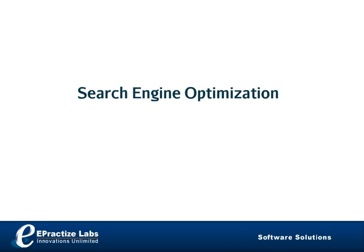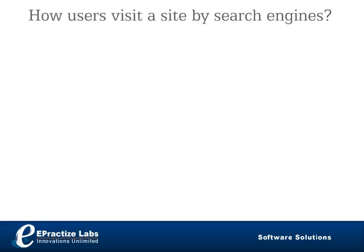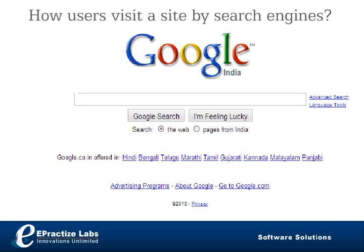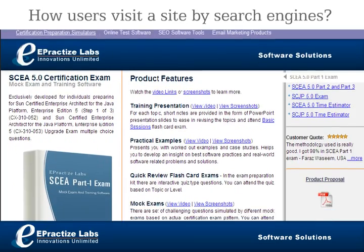Search engine optimization is the process of increasing a site's search visibility in search engines. Here is how users visit a site via search engines: a user enters a keyword in a search engine, then clicks and enters into a site.